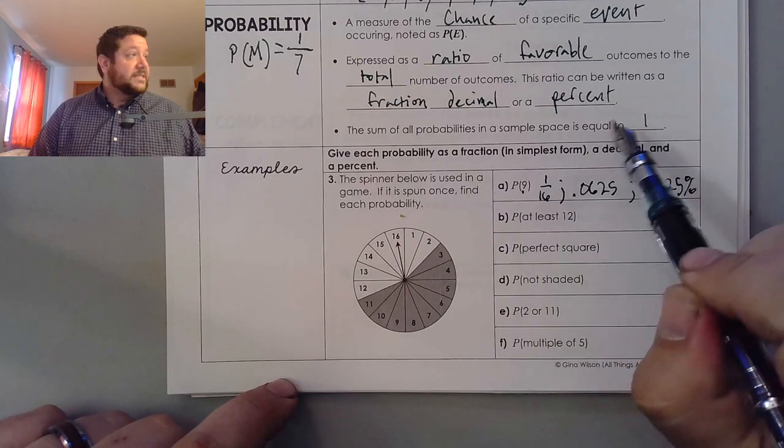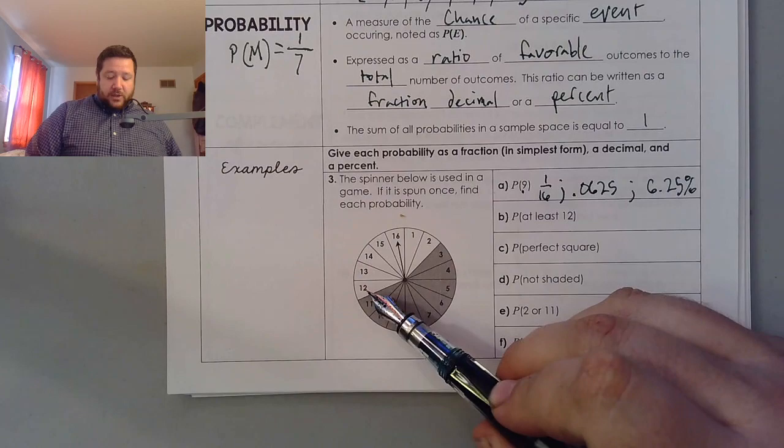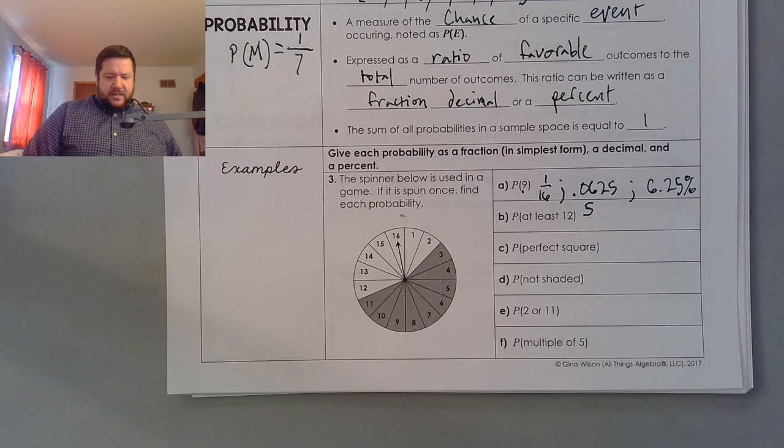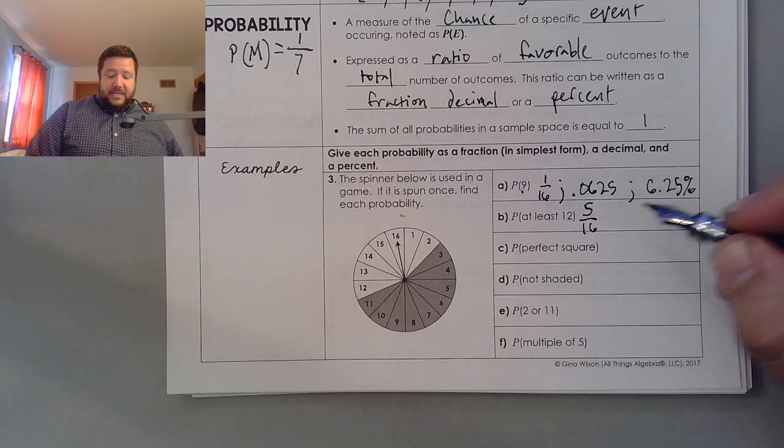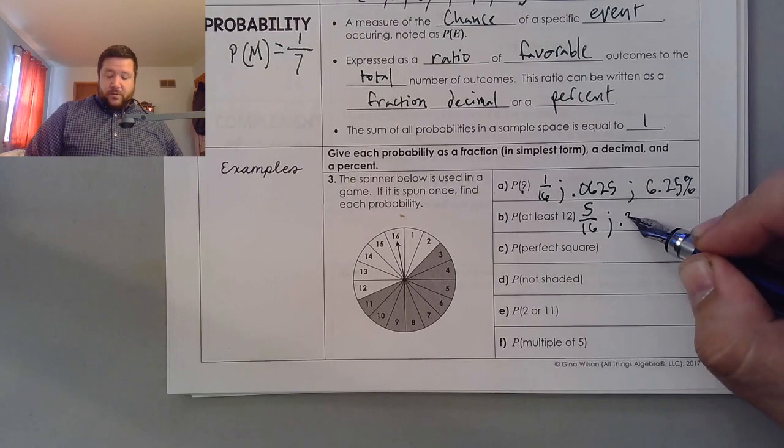Now, the sum of all probabilities in the sample space equaling to one, that's also one hundred percent. At least a twelve. So if we look here, including twelve, one, two, three, four, five, there are five possible outcomes that we would consider favorable in this case, so we would go five out of sixteen, which is 0.3125, or 31.25 percent.